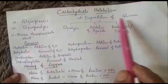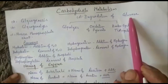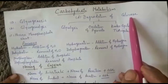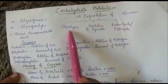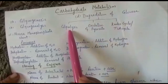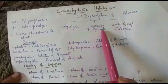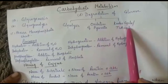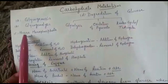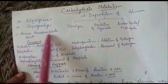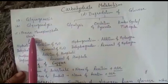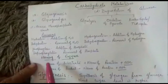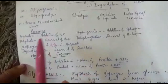We will also study how glucose is degraded in our body to produce energy. This process involves three different steps: first is glycolysis, second is oxidation of pyruvate, and third is the TCA cycle. Besides this, we will also study an alternative pathway of glucose metabolism, that is the hexose monophosphate shunt.